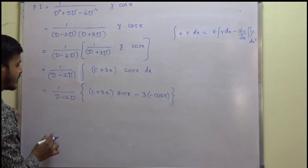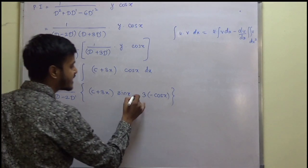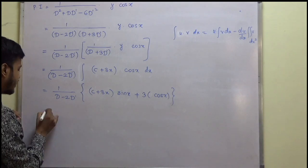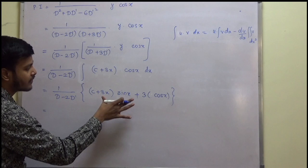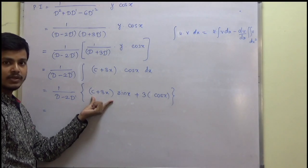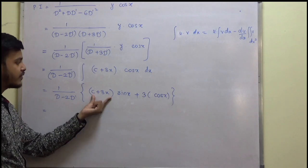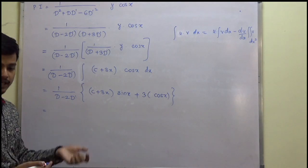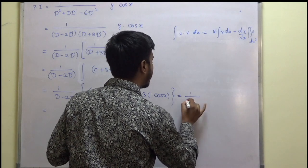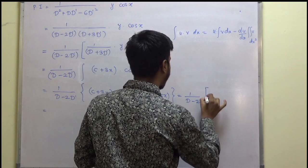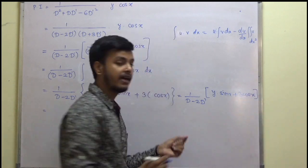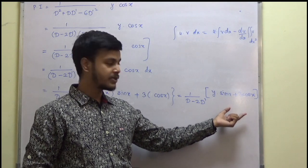Now we need to apply 1 upon (D minus 2D') to (y sin x + 3 cos x). This becomes a problem of rule 6 again. We replace y by c minus 2x, and then write the integration of (c minus 2x)(sin x + 3 cos x) dx, where c minus 2x corresponds to y.